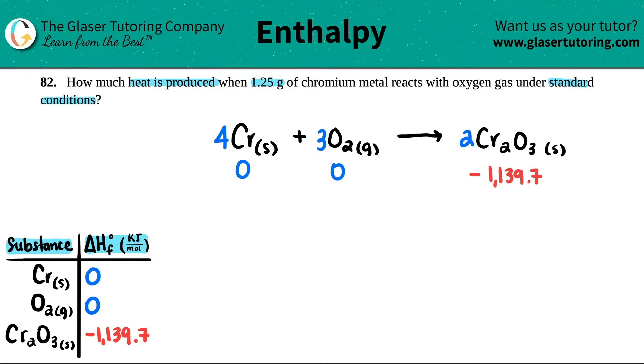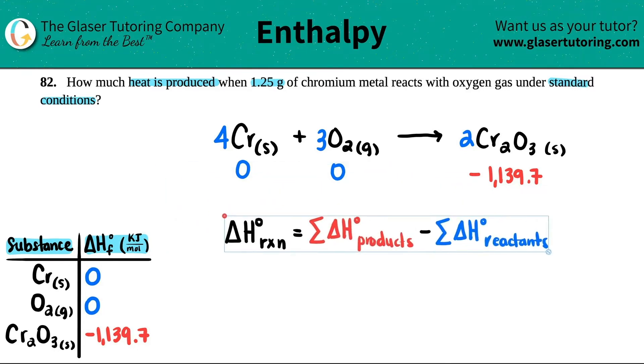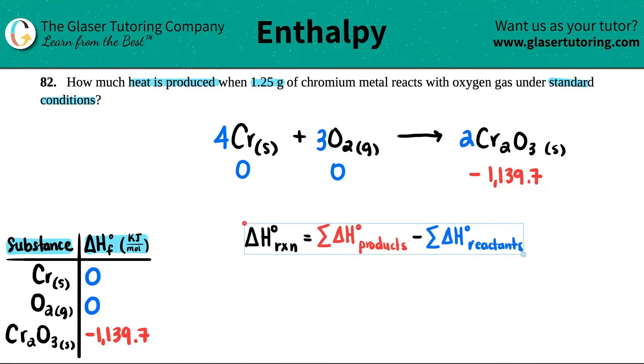If we need to find a delta H value, it comes from the formula, products minus reactants. The first thing we're going to do is get the sum of the products minus the sum of the reactants. I just need to add up the left side and get the right side number, then subtract.